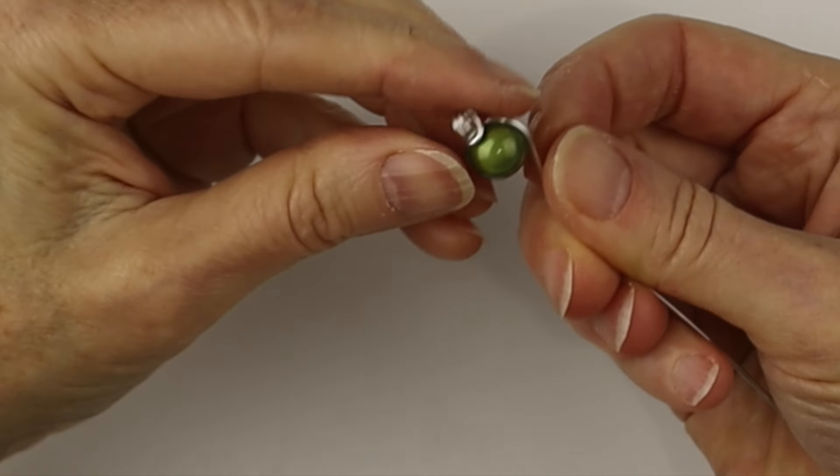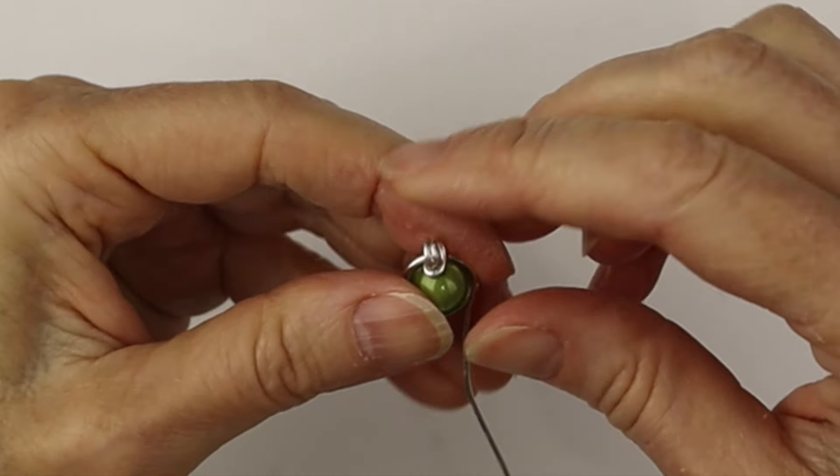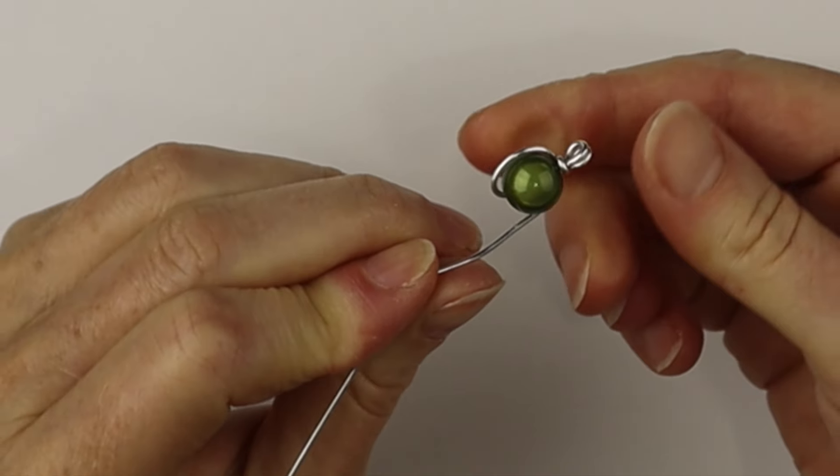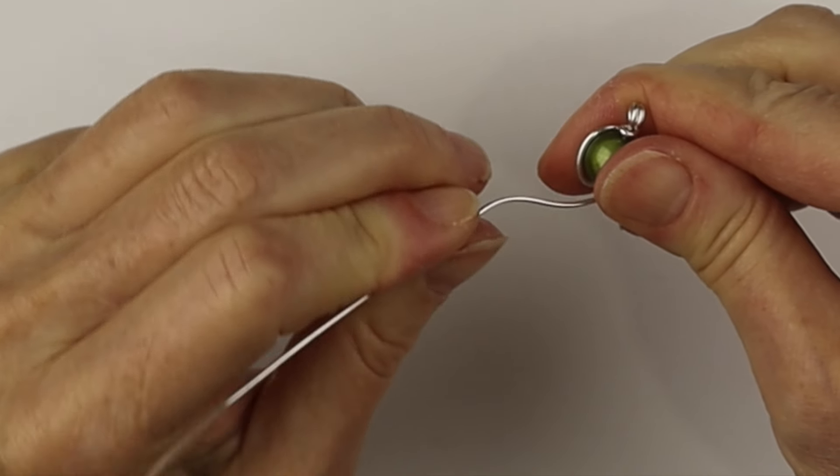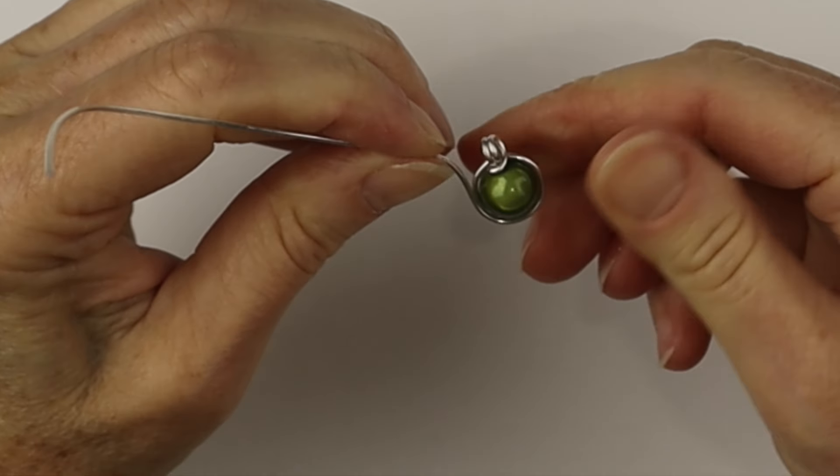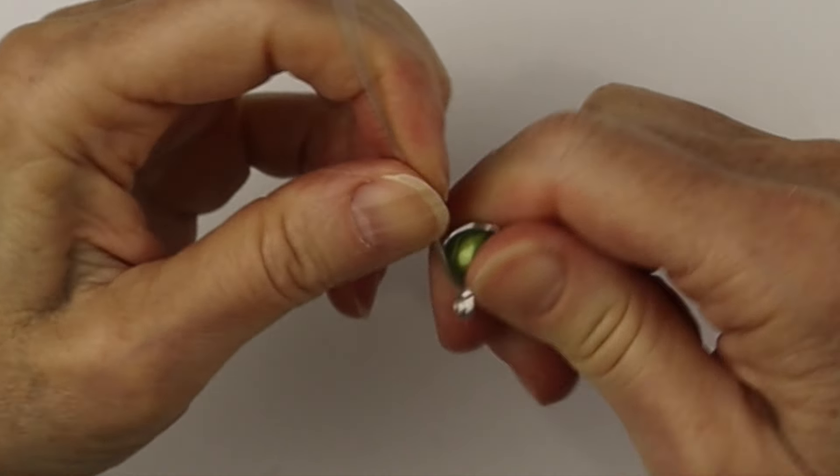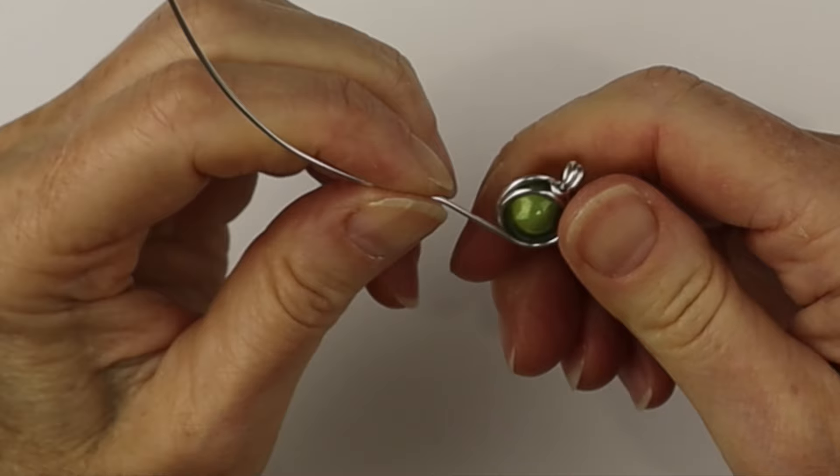We're going to bring the wire around to the front. Make sure you're pulling it nice and snugly, holding the bead firmly with your thumb and finger and just work your way around.